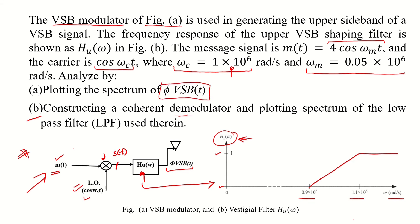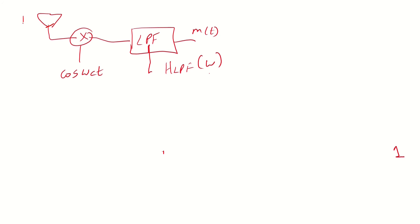The second part asks us to construct a coherent demodulator and plot the spectrum of the low-pass filter used therein. The block diagram for coherent or synchronous demodulation is: we take the received signal, multiply it by the local carrier (same as used at the transmit site), then pass it through a low-pass filter to recover the desired message signal.